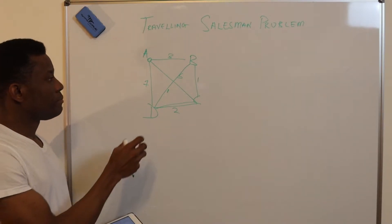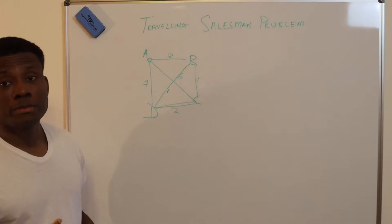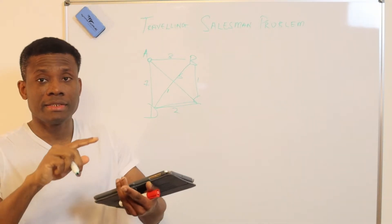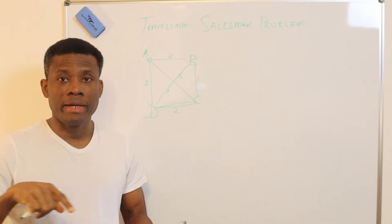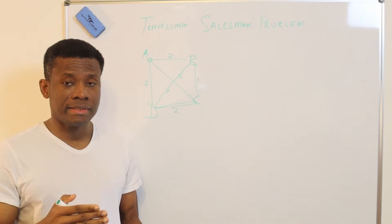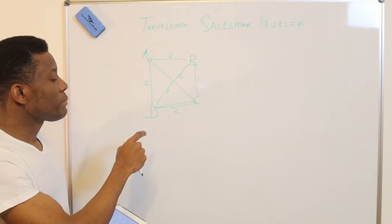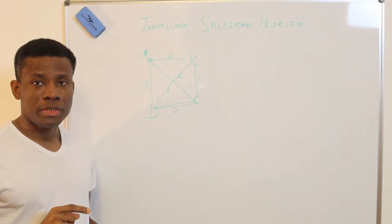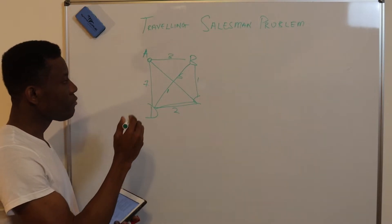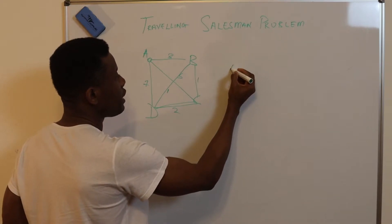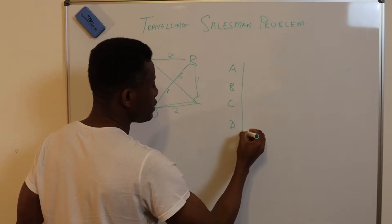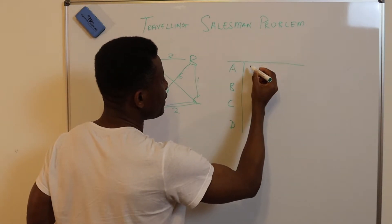To solve this problem, we represent it using something called a distance matrix. The distance matrix is a square matrix where the number of rows equals the number of columns, and both represent the number of locations. I'm going to represent this problem in the distance matrix, with locations A, B, C, and D as both rows and columns.